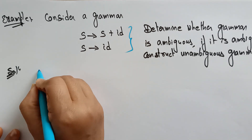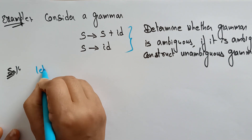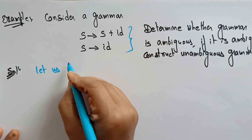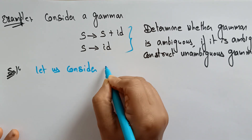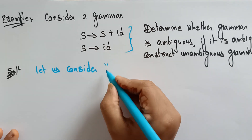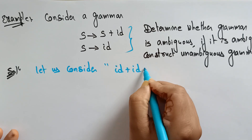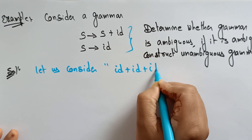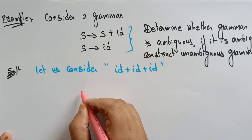The first step is to take one input string. Let us consider one input string. We need to parse that input string. Let me take id plus id plus id. So this is the input string I have taken. Now I need to construct the parse tree for the given grammar.